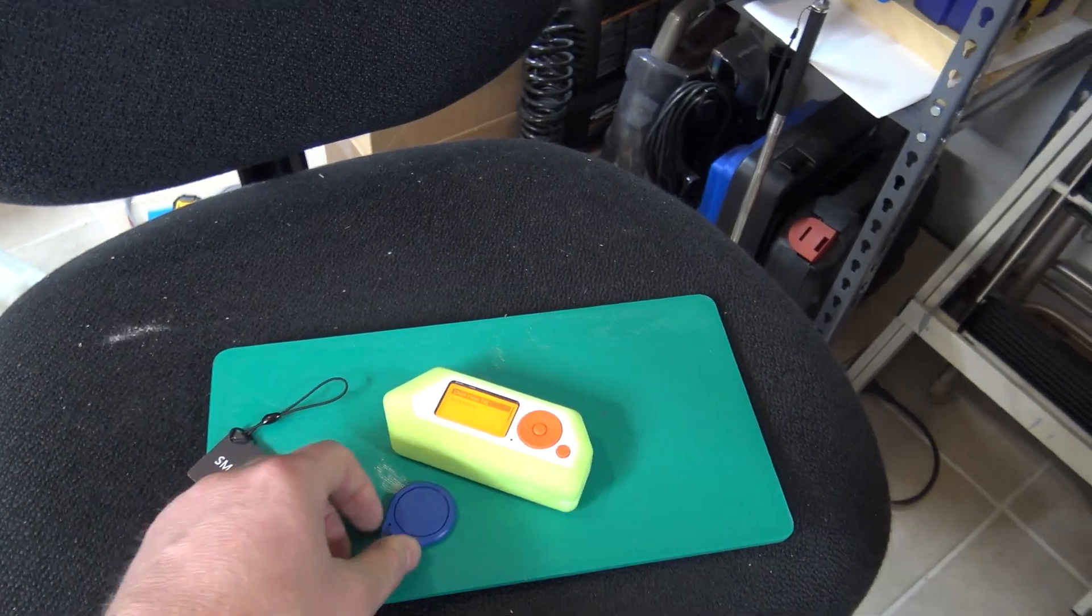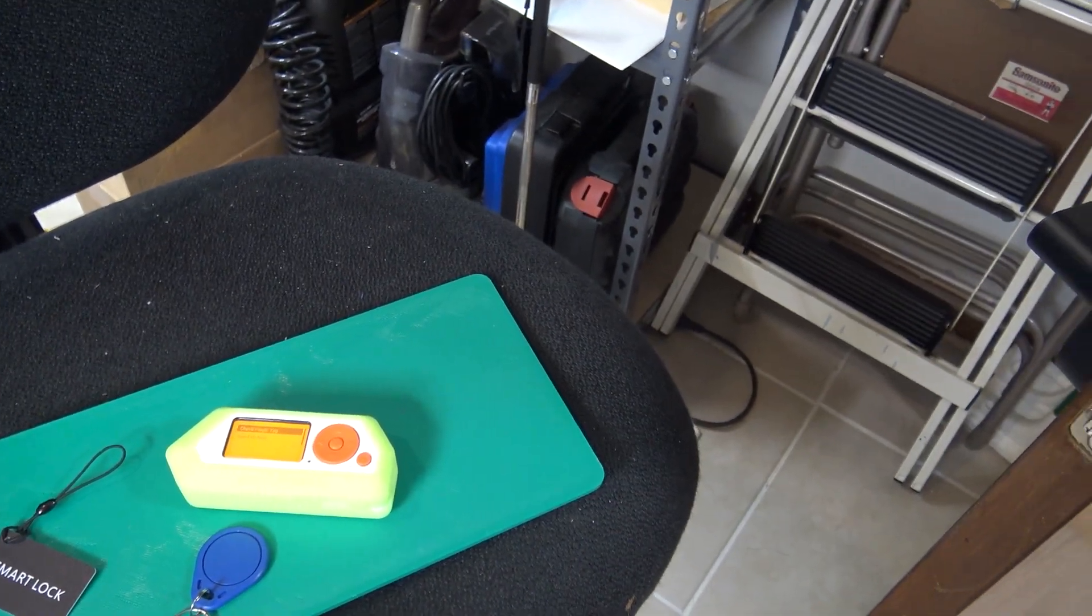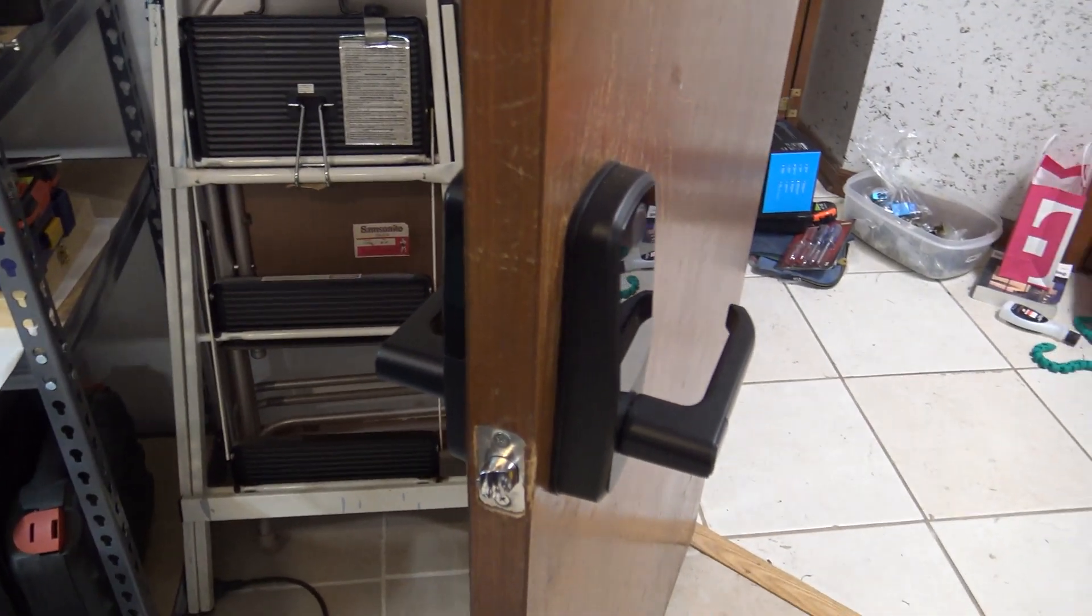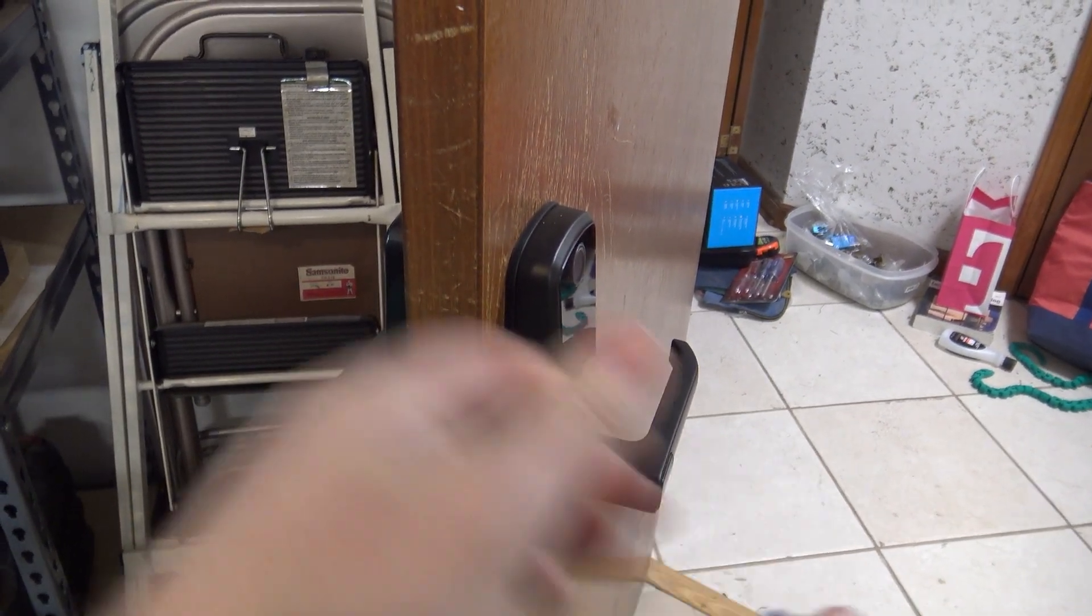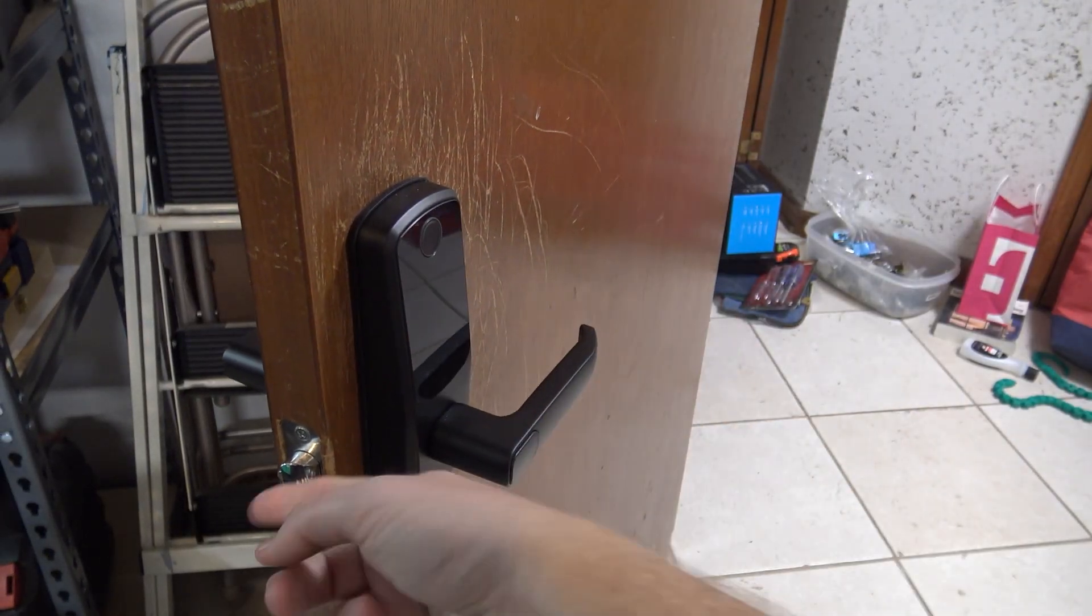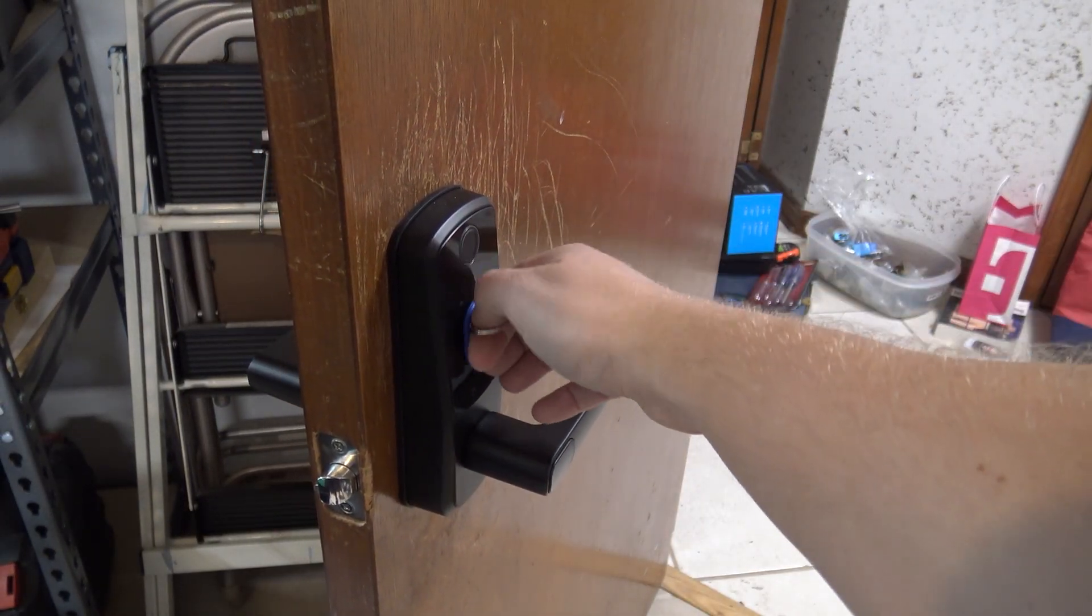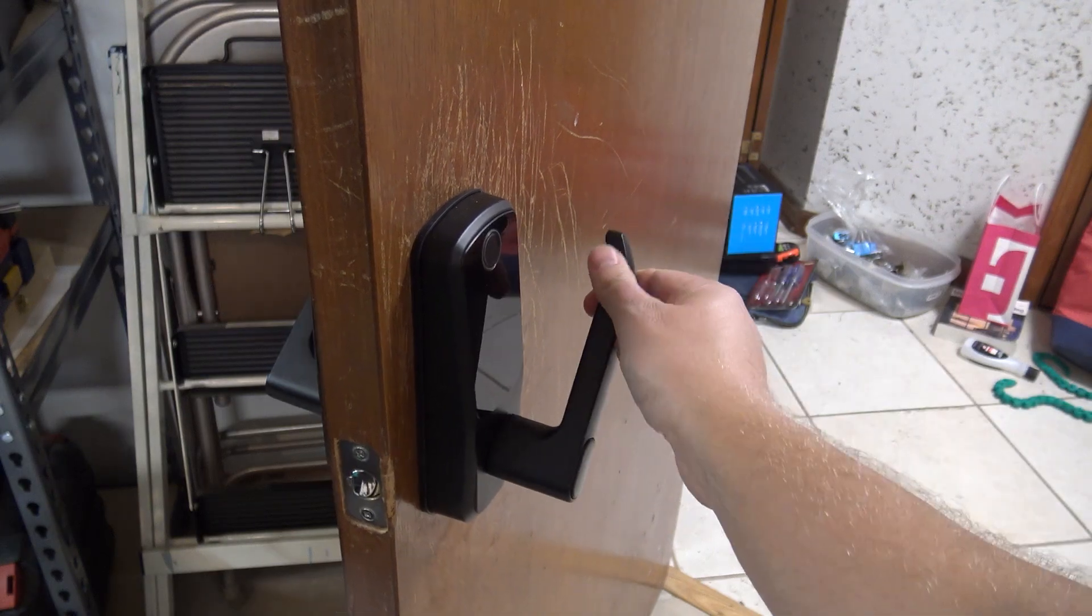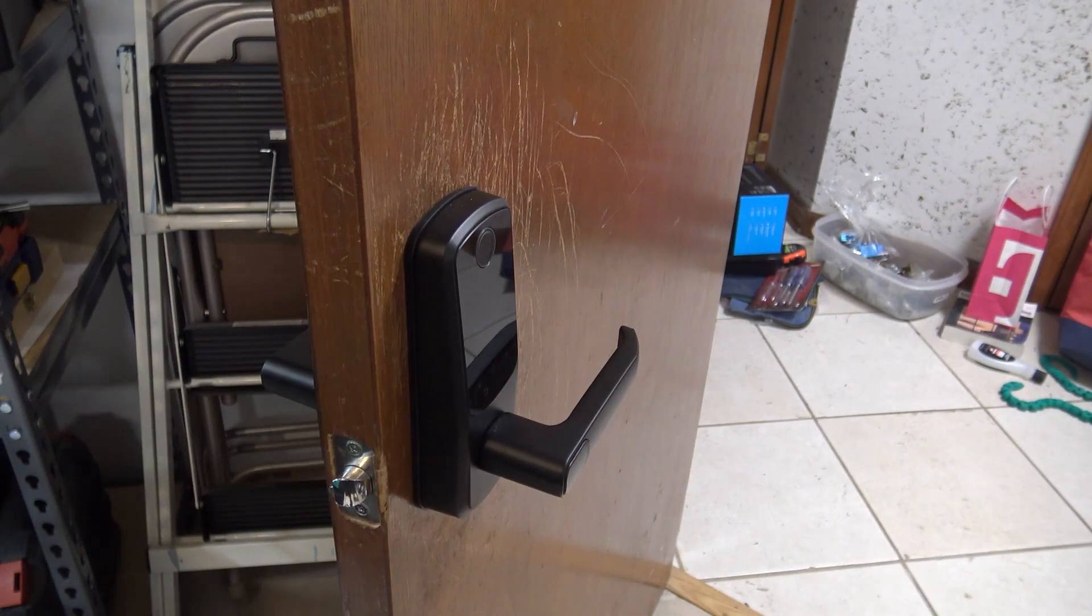And now we'll go ahead and just check our tag on our lock over here. And we just noticed the door right now is locked, the latch is not moving. And now it's actually unlocked. And now the card actually works.